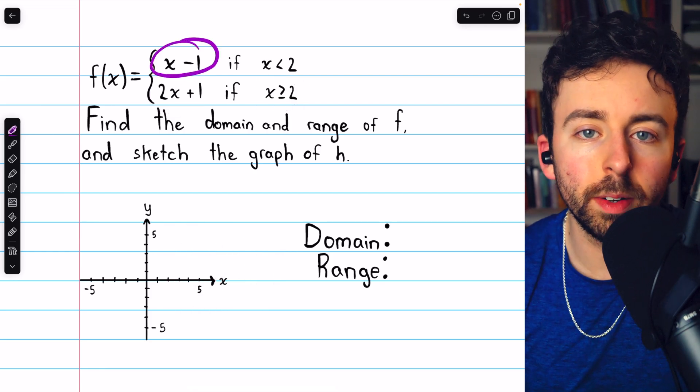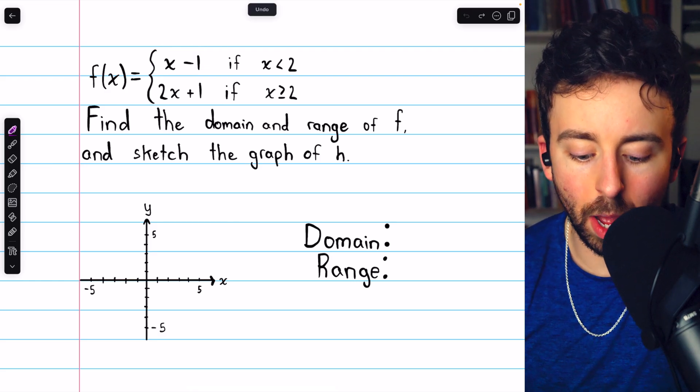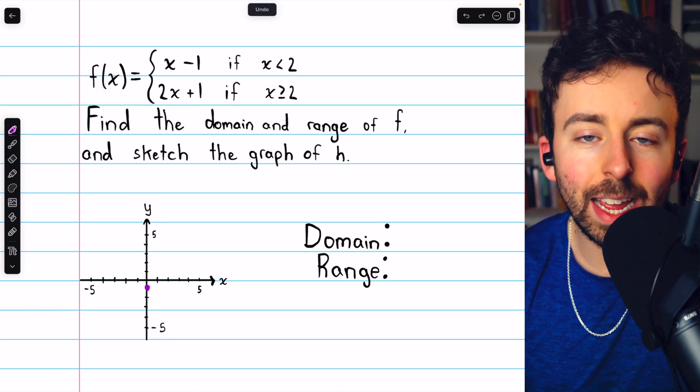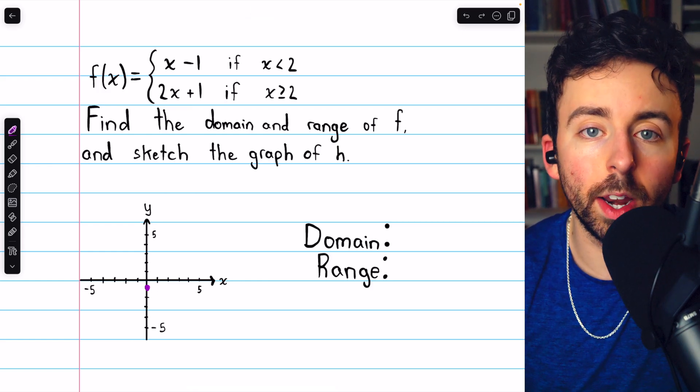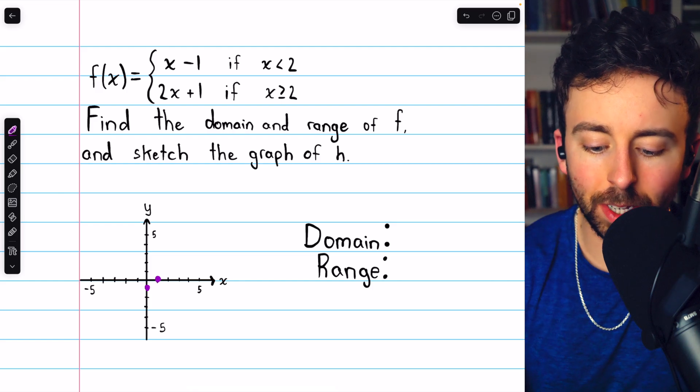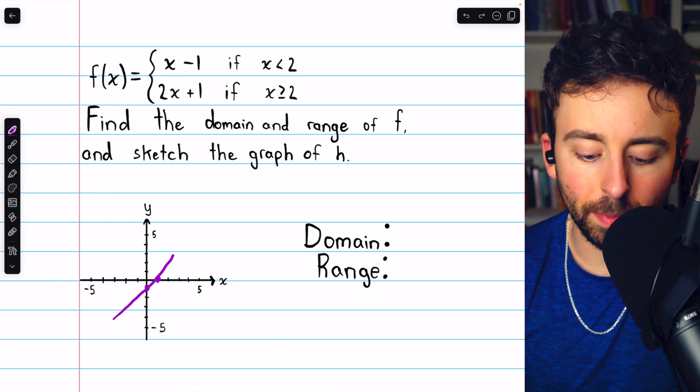Let's start with x minus 1. You should know how to graph x minus 1. It's just a line. Its y-intercept is negative 1, so that's right there. And it has a slope of 1. So I could go up 1 over 1 and get right there, because the slope of this line is 1. So then the line would look something like this.